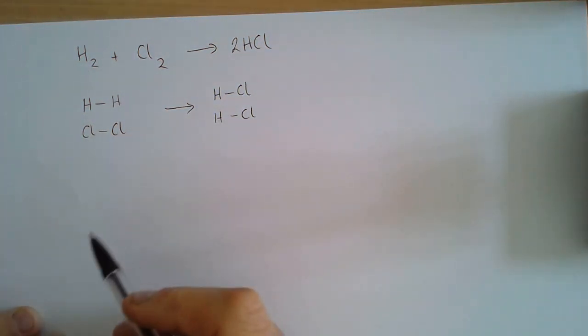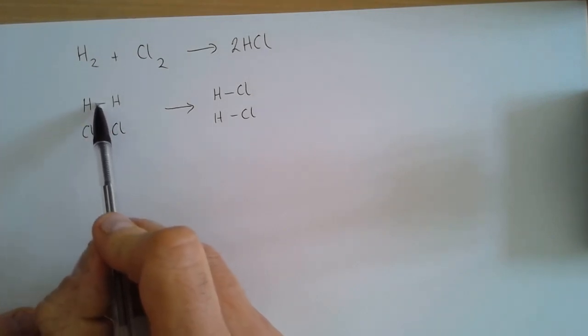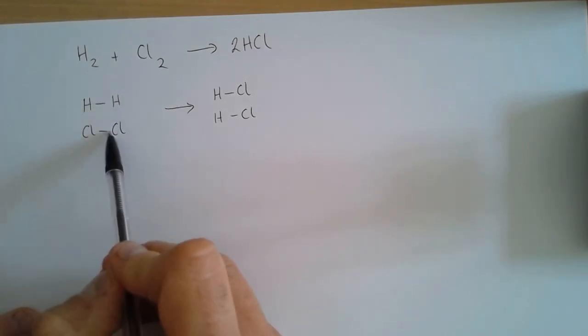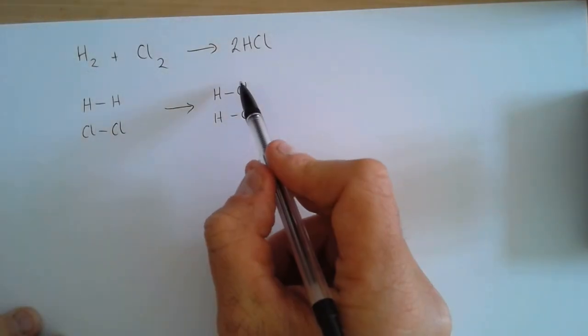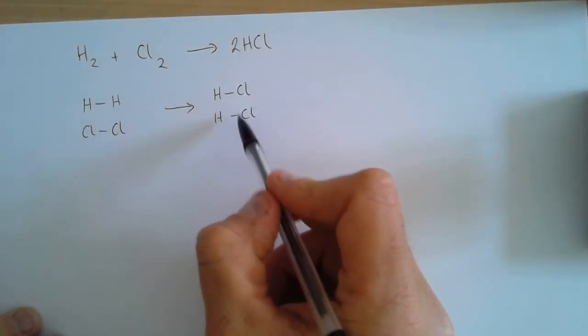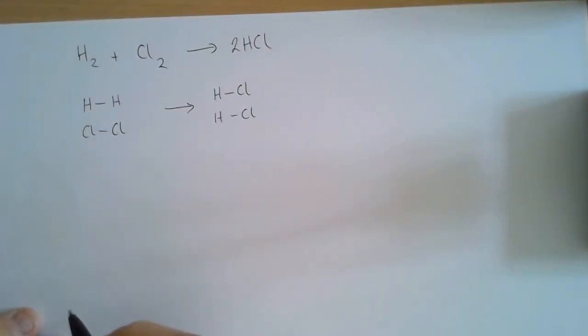And that goes to make two HCl molecules, so in each case we've got a hydrogen bonded to a chlorine. So what's happened in this reaction is that the bonds here, the hydrogen to hydrogen bond and the chlorine to chlorine bond, has been broken and we've made two new bonds, in this case two bonds between hydrogen and chlorine.